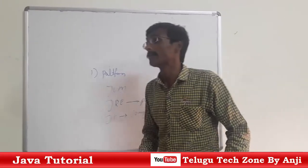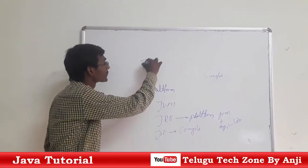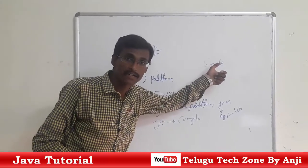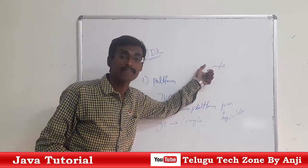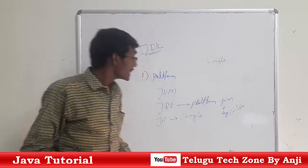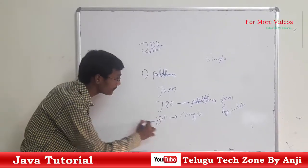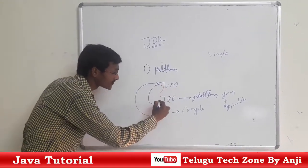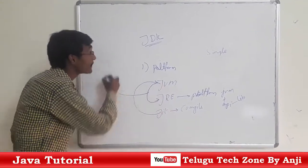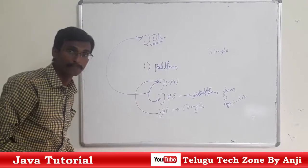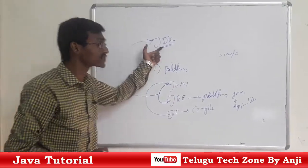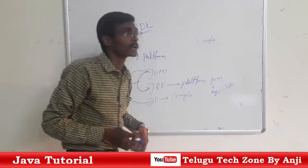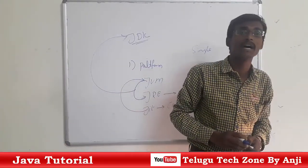The final component is JDK. JDK stands for Java Development Kit and is also called Java Software. JIT is a part of JVM, and JVM is a part of JRE, and JRE is a part of JDK.